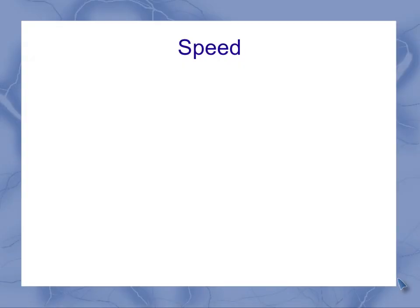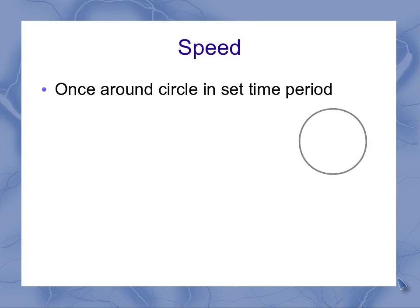Now if I want to find out what that speed is, it goes once around that circle in a set time period. So if I measure some place as my starting place, I want to go once around, and that's going to be the circumference of the circle in however much time it takes to go once around.